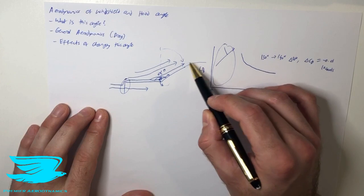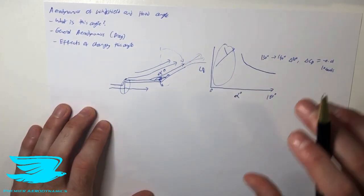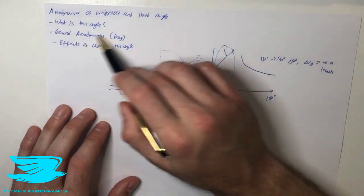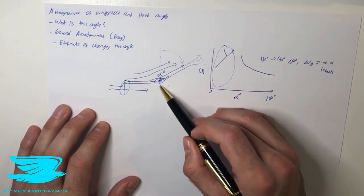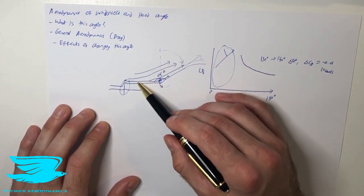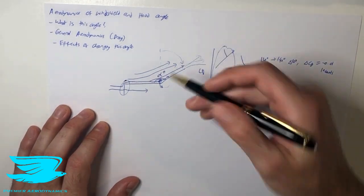Also, as the flow comes up depending on what the roof is doing it may stay attached or may separate and we'll cover this in a second video. So that's the aerodynamics of the windshield and hood angle. We've gone through what the angle is, and this is the angle between where the hood meets the windshield. We've talked about the general aerodynamics of it, so the flow often separates, in fact usually it does separate, however it's not as bad as what we may think because we do have some...